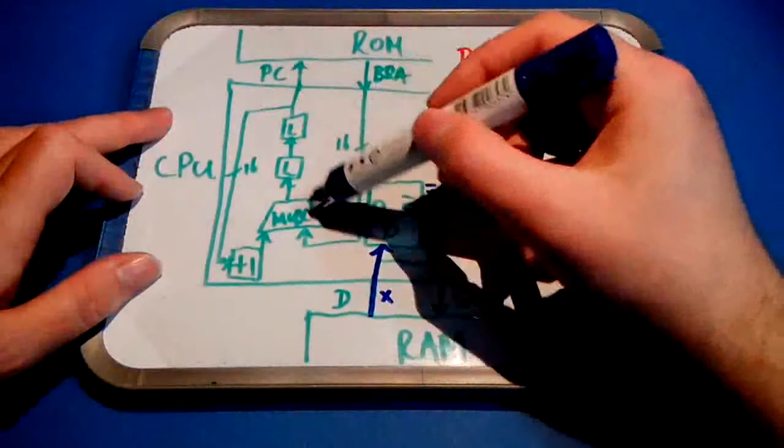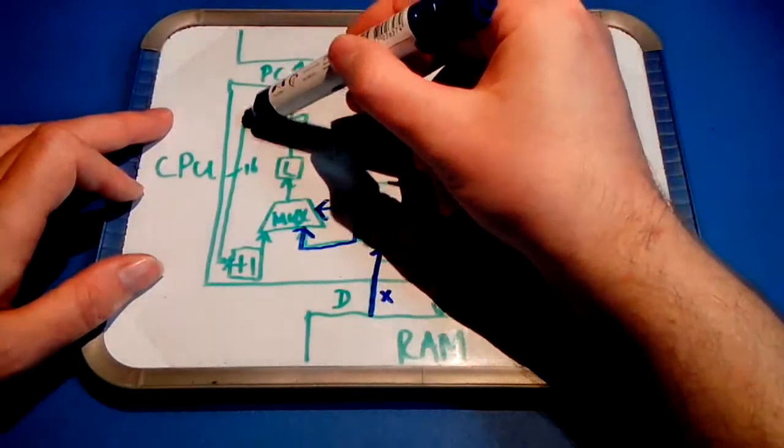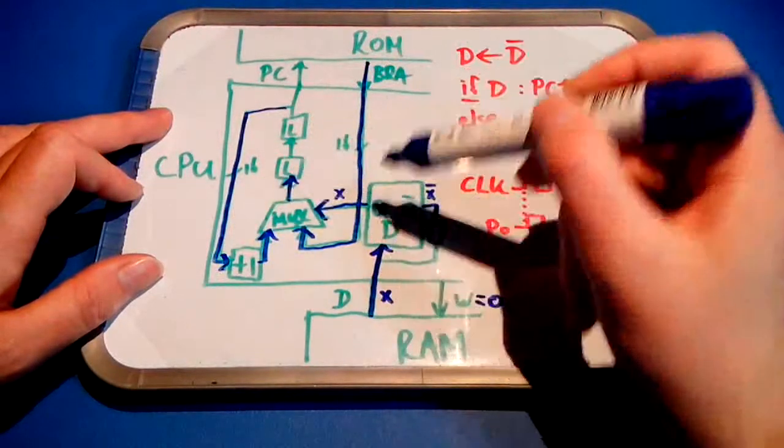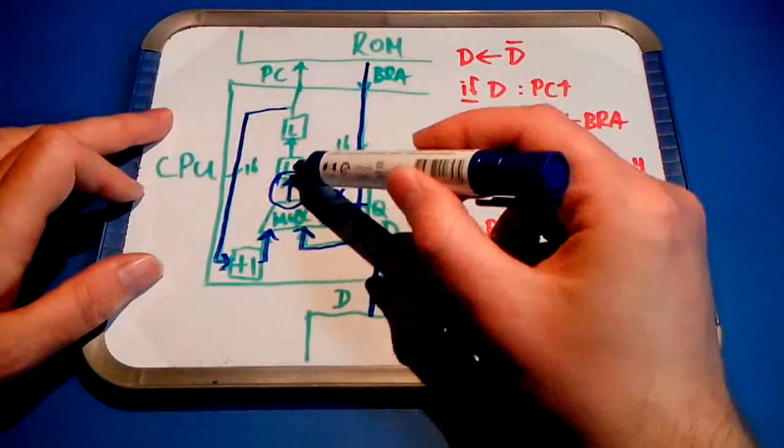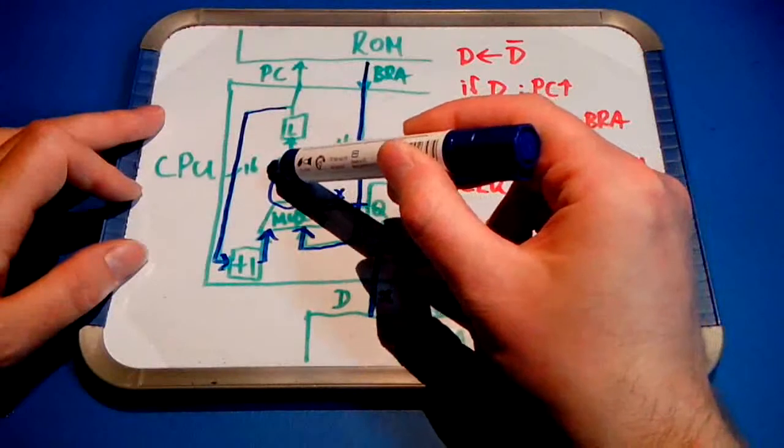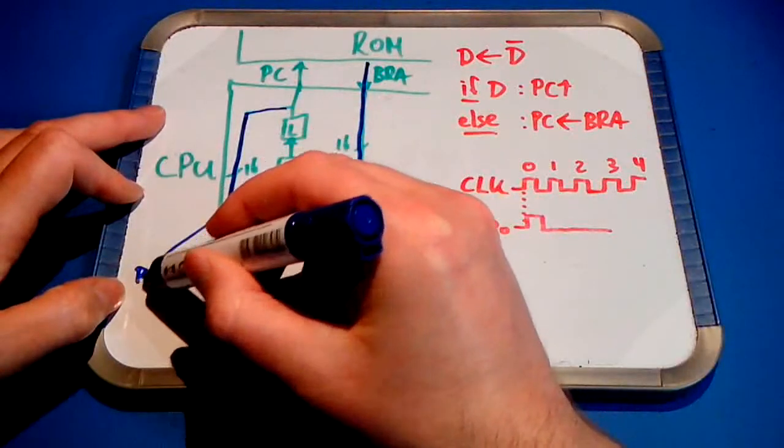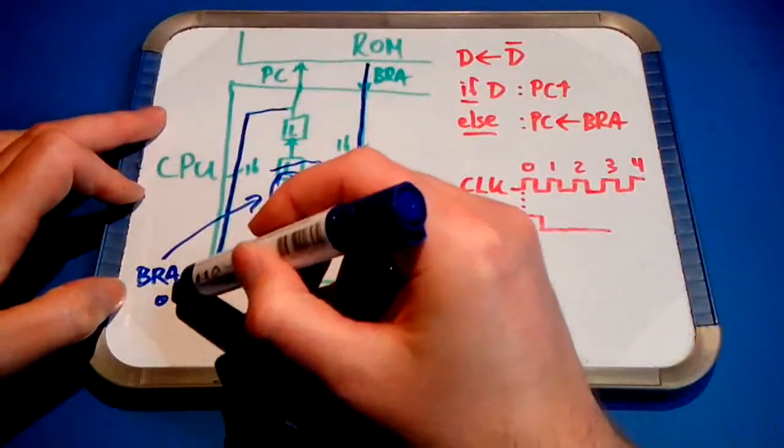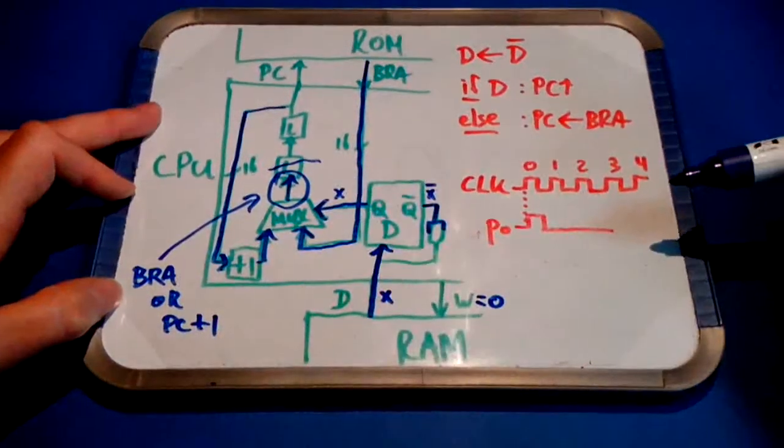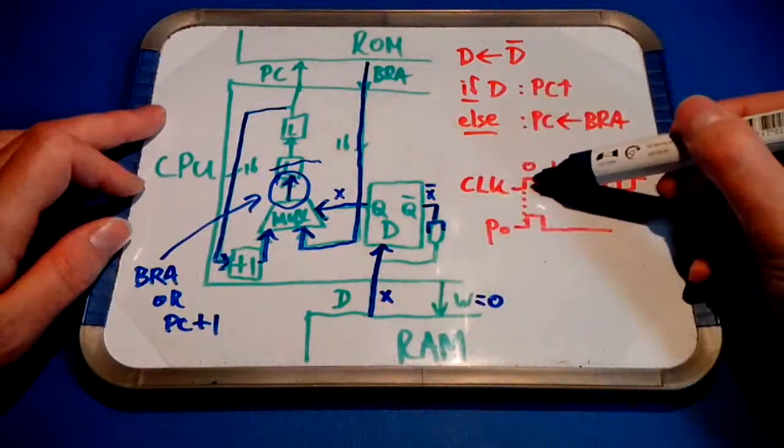And this multiplexer has basically made a choice between the branch address or the incremented program counter. And that resulting value is applied to the bottom side of this address latch. To the bottom side of the first latch, the bottommost latch. It cannot cross this latch, because this latch is closed. So this value here, is basically the branch address coming in there, or the current program counter incremented with one. Okay, that will be the next program counter value. The location of the next instruction. So that's what happens at the first clock pulse.